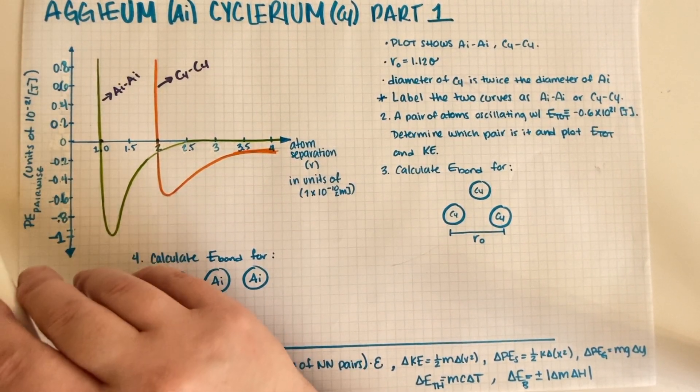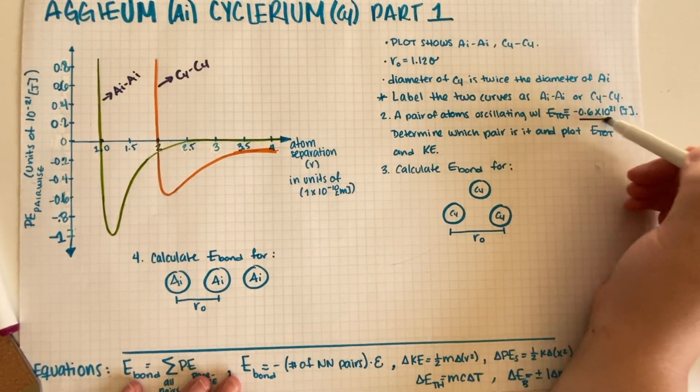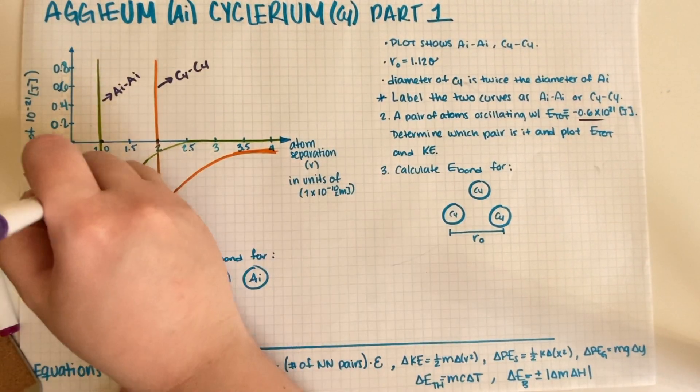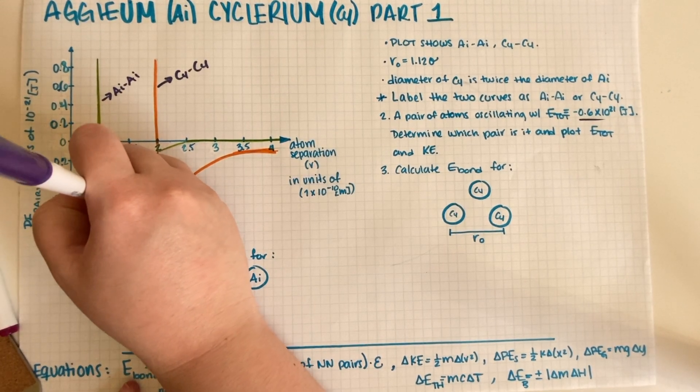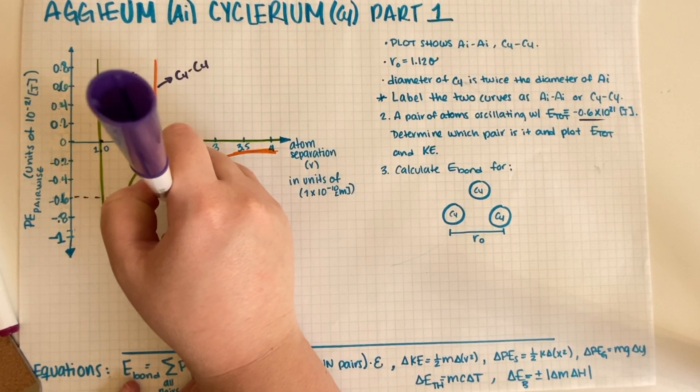So that was pretty easy to figure out. So now let's just figure out the second part which says that a pair of atoms is oscillating at -0.6. So that would be this line over here.